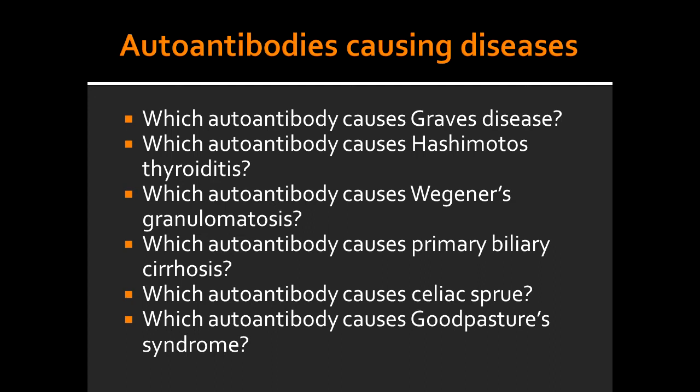Which autoantibody causes primary biliary cirrhosis? Primary biliary cirrhosis is caused by anti-mitochondrial antibody. Which autoantibody causes celiac sprue? Celiac sprue is caused by anti-Gliadin antibody. Which autoantibody causes Goodpasture syndrome? Goodpasture syndrome is caused by anti-glomerular basement membrane autoantibody.